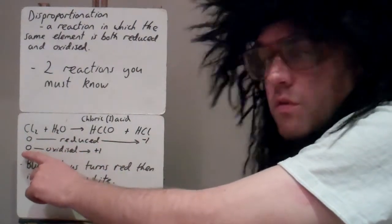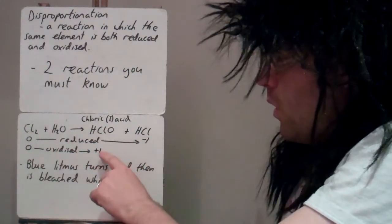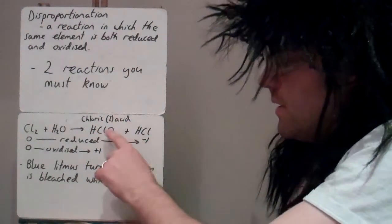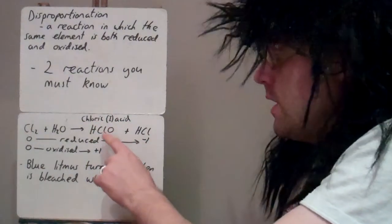The other chlorine starts off as zero but ends up as plus one in the chloric acid. That's why it's called chloric-1-acid, because the oxidation number of the chlorine is plus one.